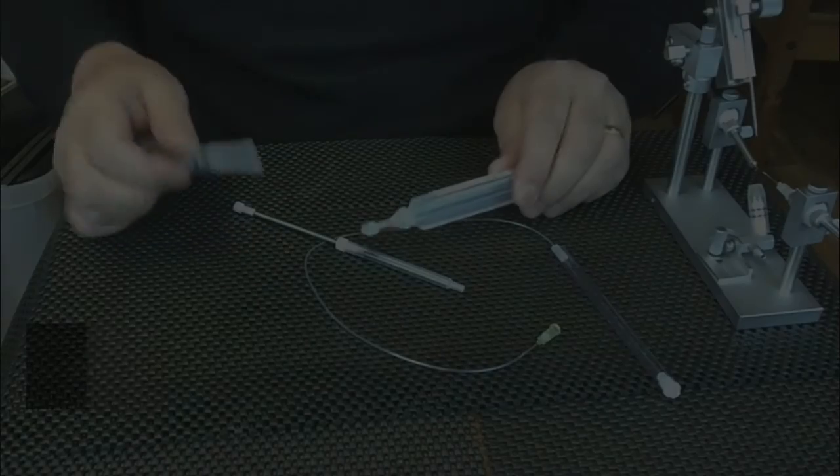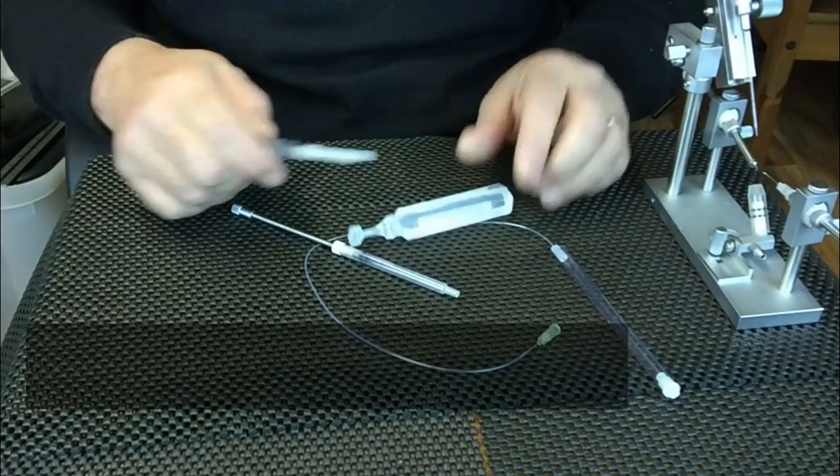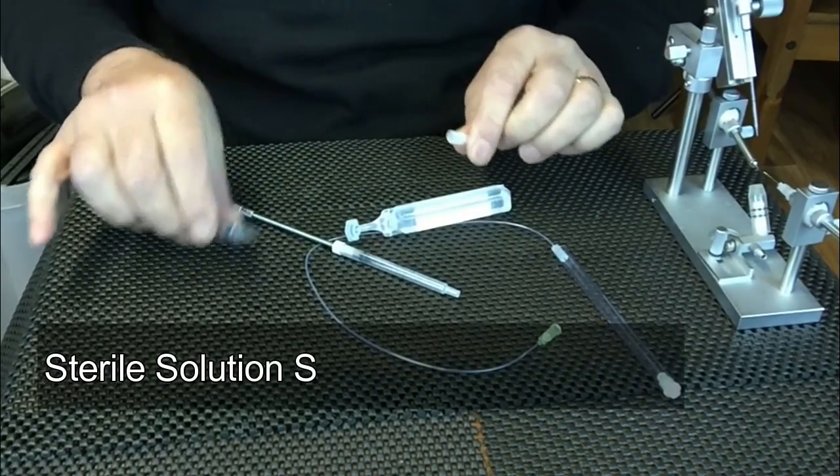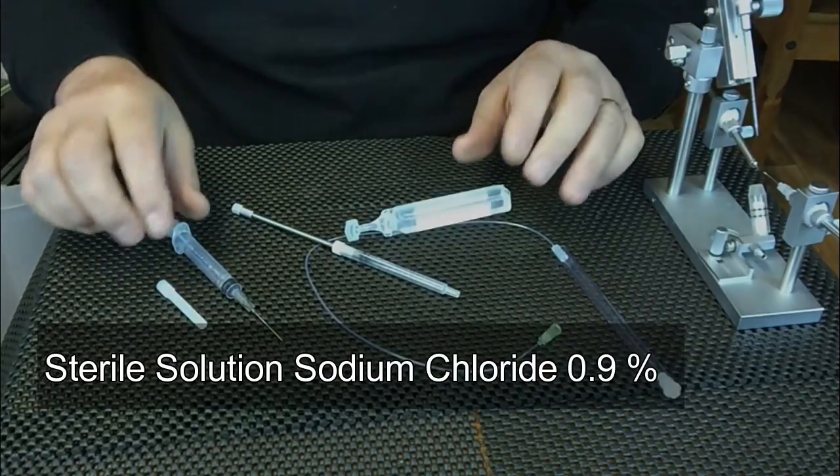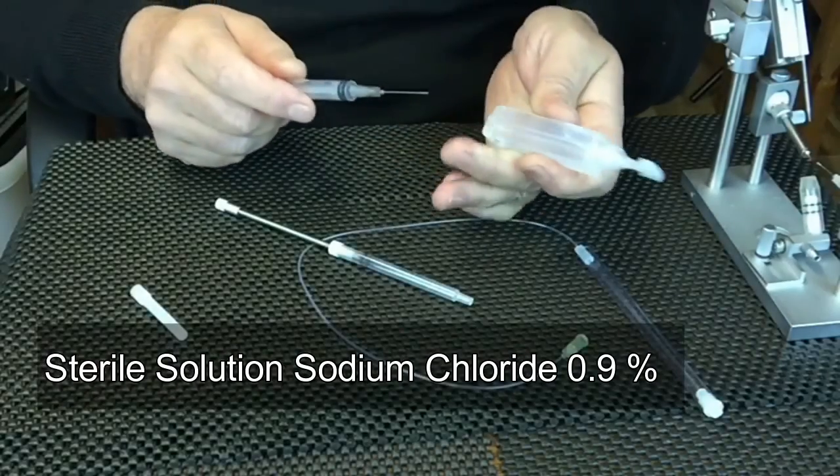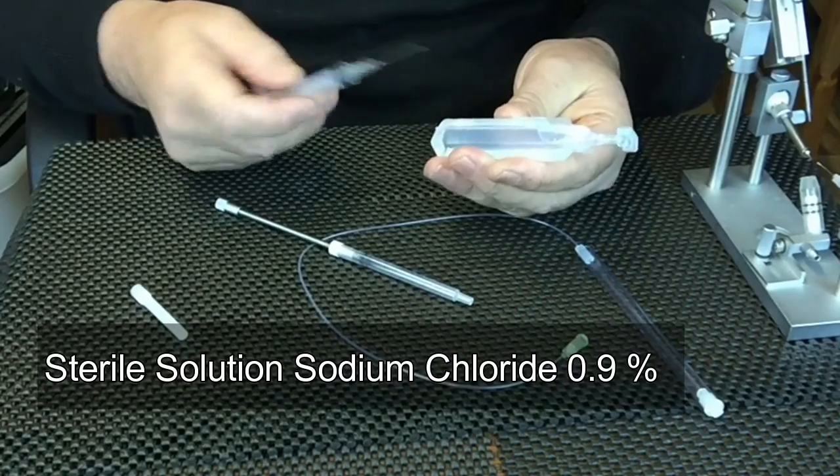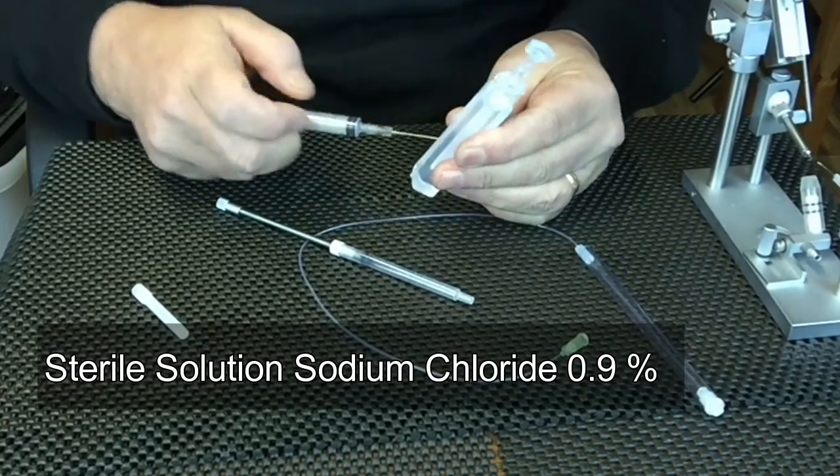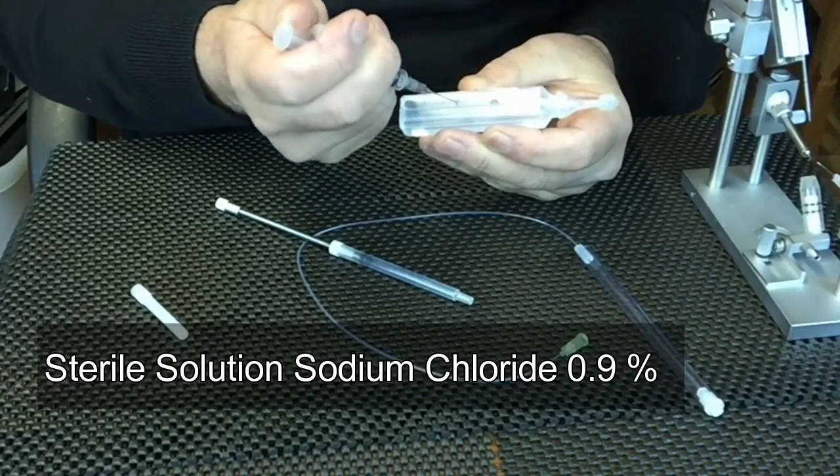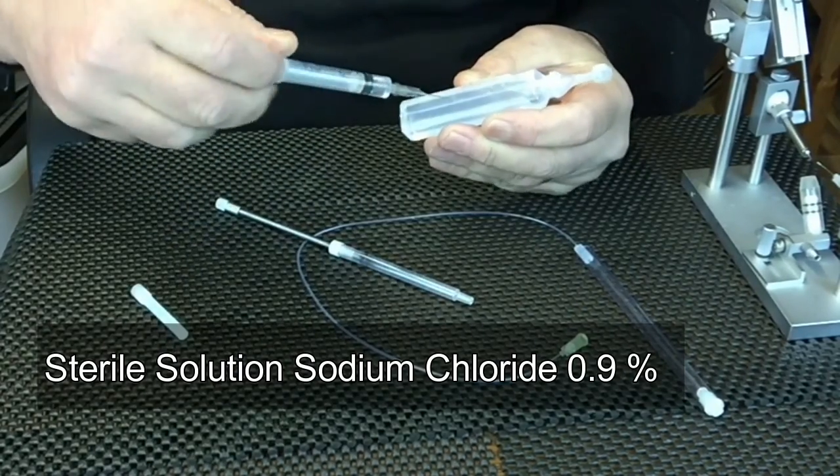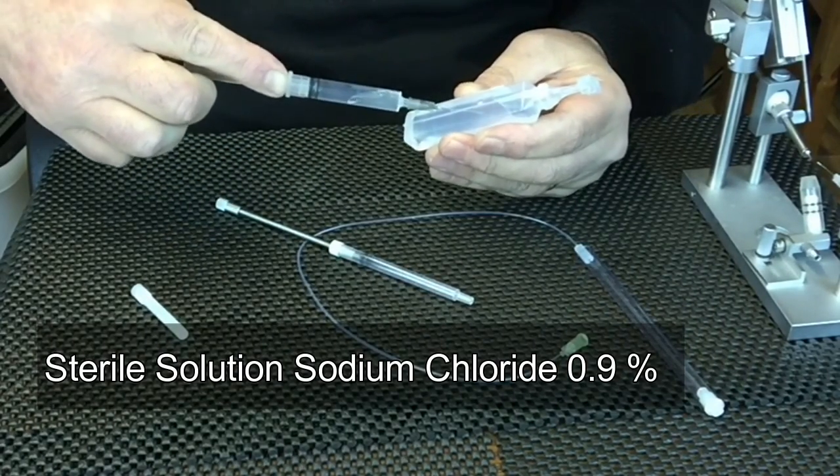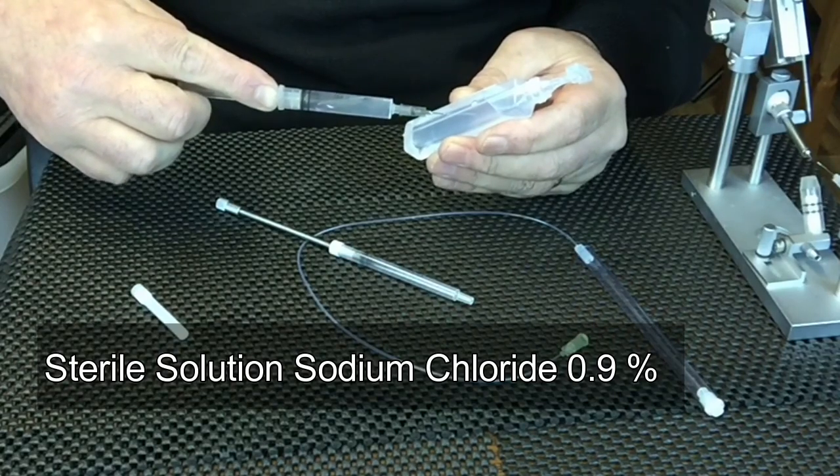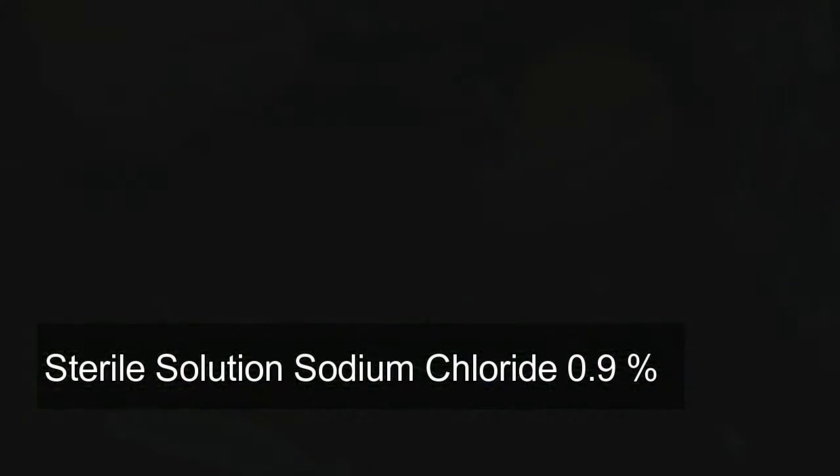Using a syringe and a sharp needle, you can fill your syringe by just piercing the saline. We're going to fill the syringe.